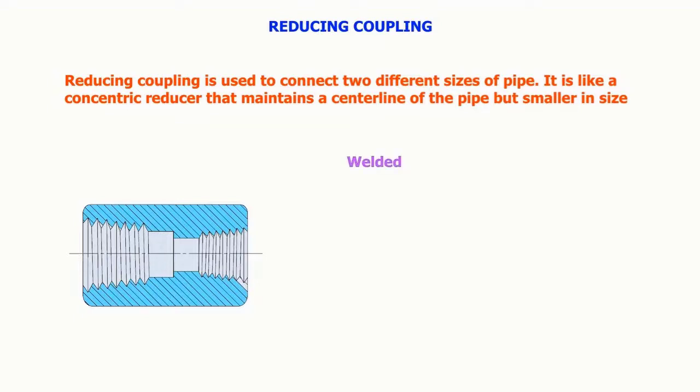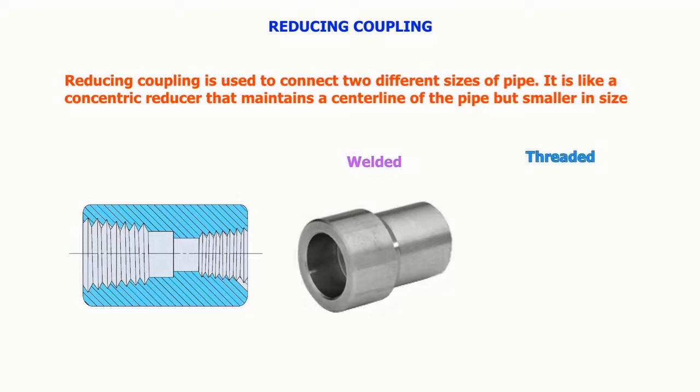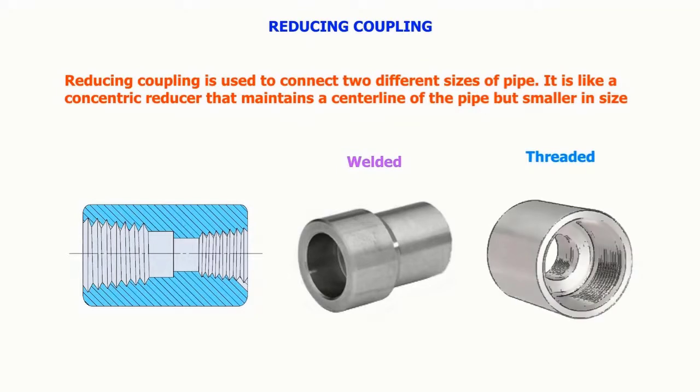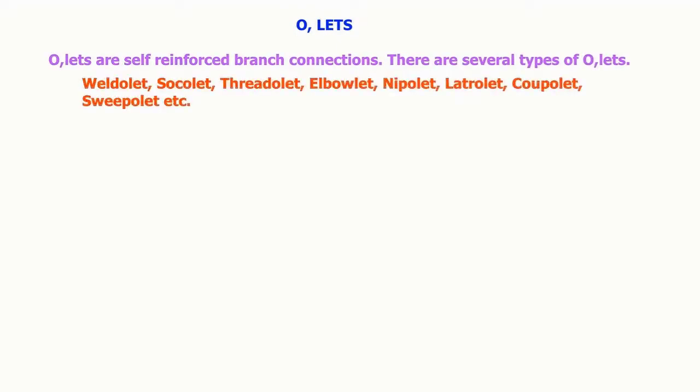Olets are self-reinforced branch connections. There are several types of olets: weld-o-let, sock-o-let, thread-o-let, elbow-let, sweep-o-let, lateral-let, coup-o-let, and others.